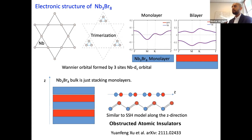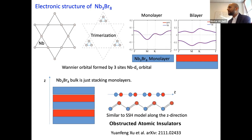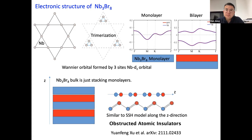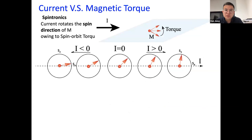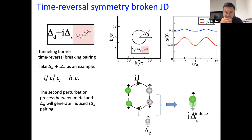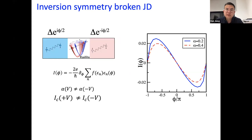There is a question in the chat: in a superconductor–normal metal–superconductor junction where the central normal metal is a Rashba system and a magnetic field is applied to the normal metal region, but the proximity superconductivity is negligible — do you still expect a superconducting diode effect? The only thing you need is to break the inversion symmetry. It does not matter whether you use Rashba coupling or something else. You can still see the Josephson diode effect in this case.